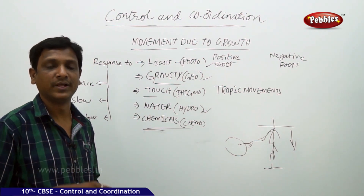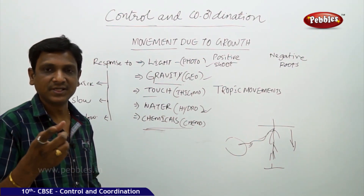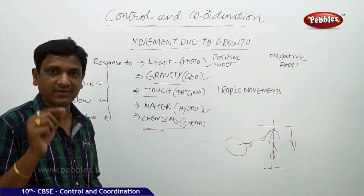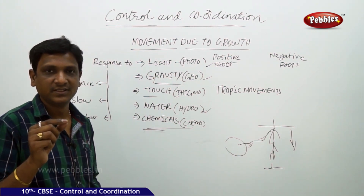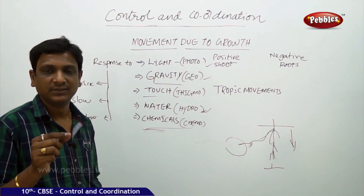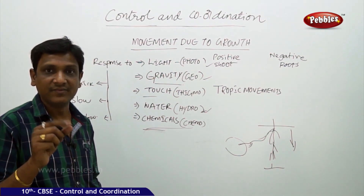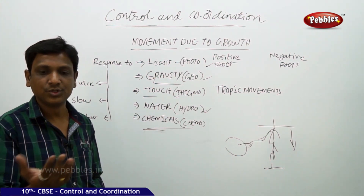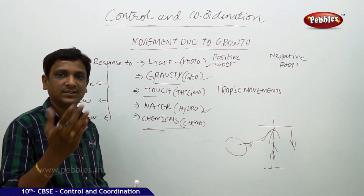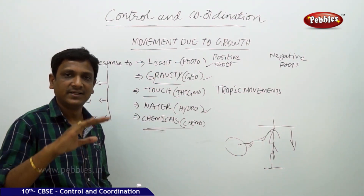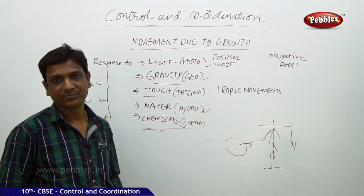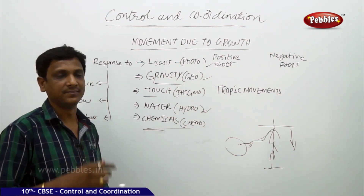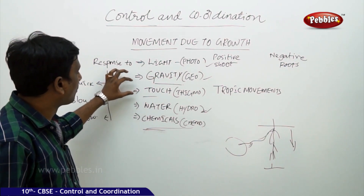How does a tendril coil around an object? When the tendril comes in contact with some object, the part of the tendril in contact with the object grows slower, while the part not in contact grows faster. This differential growth causes it to turn and coil around the object. In this way, it gets support and the plant climbs. This is thigmotropism — a tropic movement in response to touch.